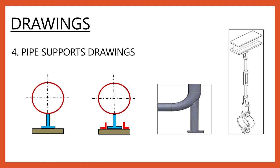The fourth drawing is pipe support drawings. Pipe supports also need to be fabricated and constructed with respect to the piping isometrics. It is very important to have individual pipe support drawings for better fabrication and construction. A few companies have a set of standard pipe support drawings, but in case of non-availability of these standard drawings, we have to prepare pipe support drawings for individual supports.